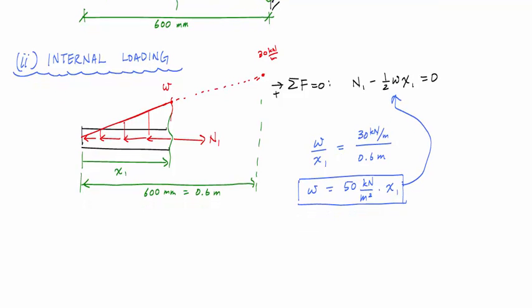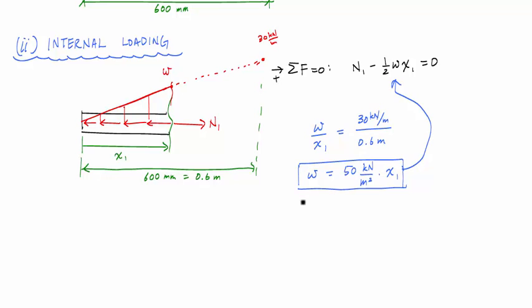Now I just want to take this thing and substitute it into my equilibrium equation. That will tell me that the internal normal force as a function of x1 is equal to one-half times 50 kilonewtons per meter squared times x1 times x1 again. When I work this out, this gives me 25 kilonewtons per meter squared times x1 squared.